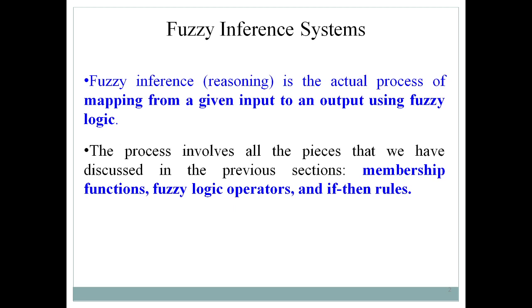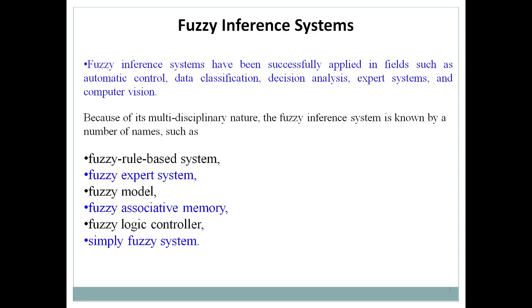Generally, fuzzy inference systems are used in embedded systems — for example, your washing machine and microwave. These are some examples where fuzzy inference systems are used. The scope is not limited to embedded systems; it is also used in automatic control, data classification, decision analysis, expert systems, and computer vision.